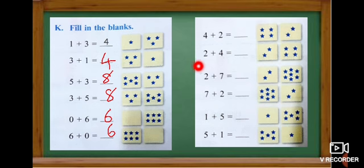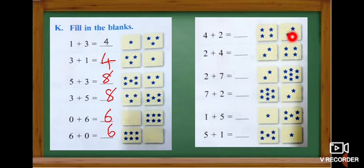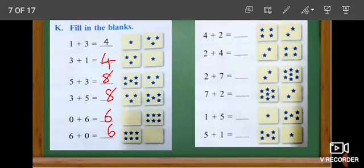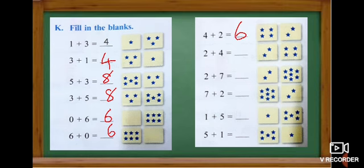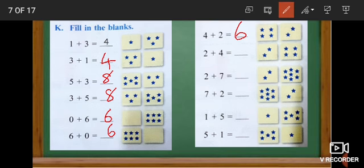Look at the next one: four plus two. Here we have four stars and here we have two stars. Totally — one, two, three, four, five, six — six stars. So we have to write six. And look at the next one — here they change the order, they write two first and then number four. The answer is six.